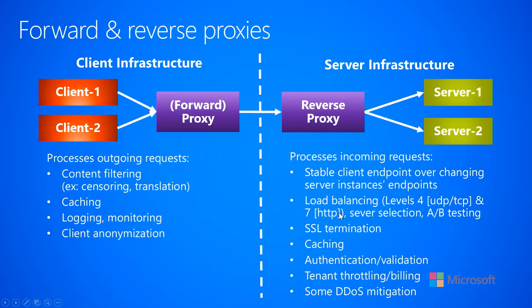Another kind of load balancing a reverse proxy can do is server selection or A/B testing. You might have version 1 and version 2 of your servers. You could tell the reverse proxy you want 10% of traffic to go to version 2 and 90% to version 1. This way, 10% of your customers get to experience the new version of your service before you switch everybody over. We will talk about versioning and this scenario in more detail later in the course.